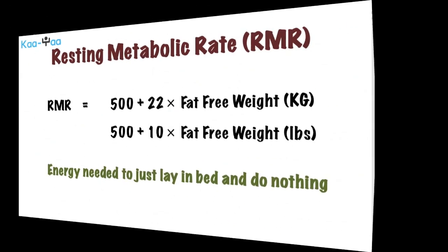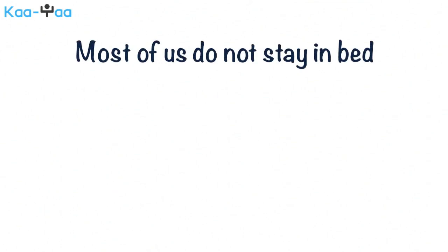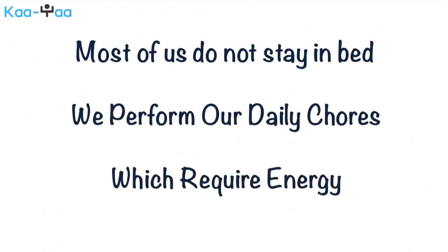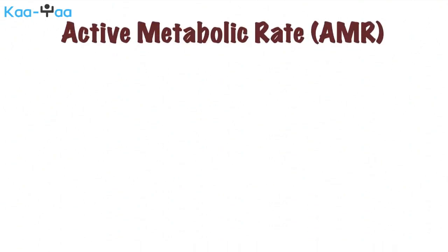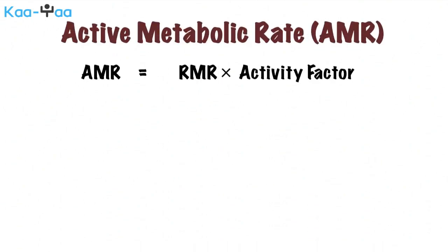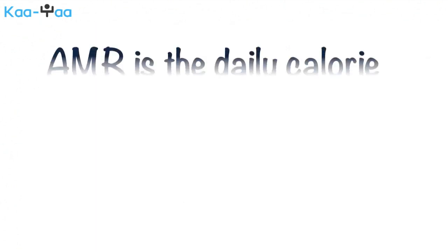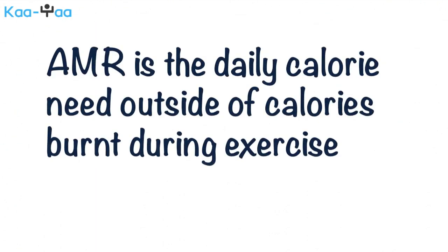Of course, most of us do not just stay in bed — we perform our daily activities, which all require energy. You can calculate your active metabolic rate, or AMR, by multiplying your resting metabolic rate with an activity factor. Shown here are the factors you need to multiply your RMR based on your level of activity. Keep in mind that this is the daily calorie need outside of calories burnt during exercise.